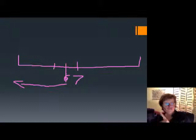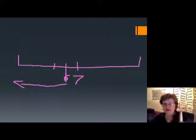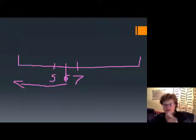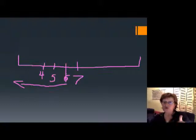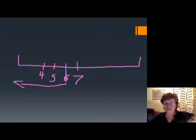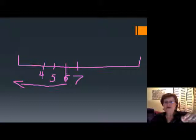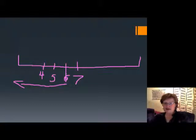If we go to pH 5, that's 10 to the minus 5, so two orders of magnitude from 7 — it will have 100 times more hydrogen ion. If it goes down to pH 4, we're three orders away from neutral, so 10 to the 3rd is 1000 times more acidic. When you drink something with a pH of 4, you're drinking 1000 times more acid than if you were drinking neutral water at pH 7.